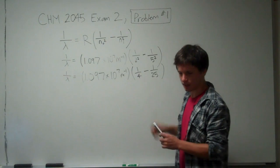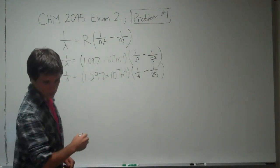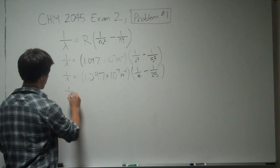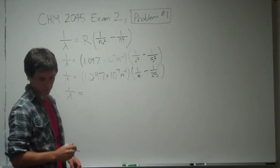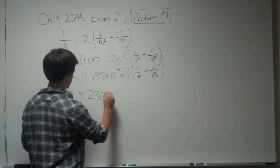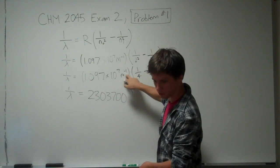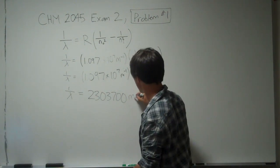So you plug all this into the calculator, you're going to end up with 1 over lambda equals 2303700. And the only unit is inverse meters, so that's still the unit.